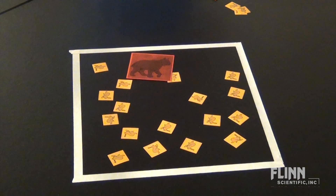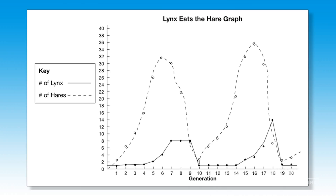Continue this pattern for 25 generations and plot the population boom and bust. Will each group have identical graphs? If not, what happened?